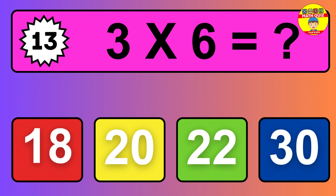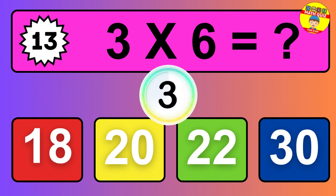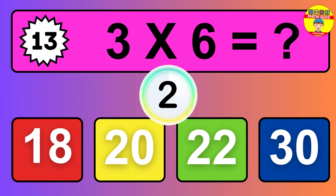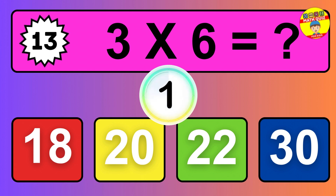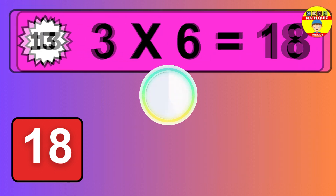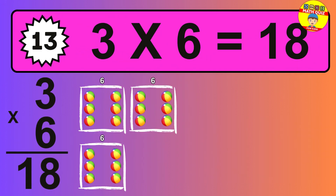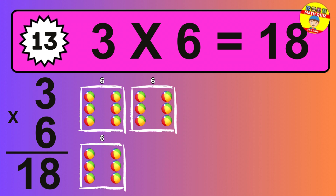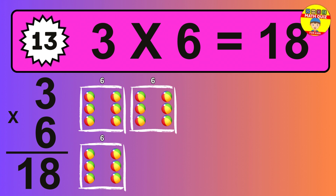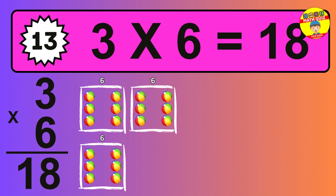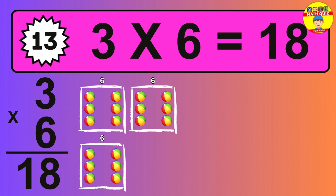Question thirteen. Three times six equals what? So the answer is three times six is 18. To calculate, we have three groups with six balls each one. So how many balls do we have? 18 balls.